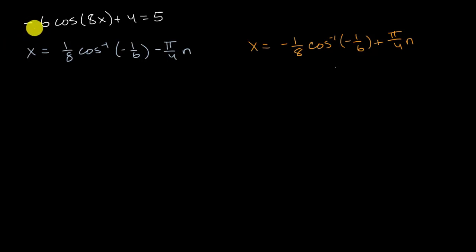In a previous video, we established the entire solution set for the following equation. And we saw that all the x's that can satisfy this equation are a combination of these x's and these x's here. The reason why I'm referring to each of them as numerous x's is that for any integer value of n, you'll get another solution. For any integer value of n, you'll get another solution.